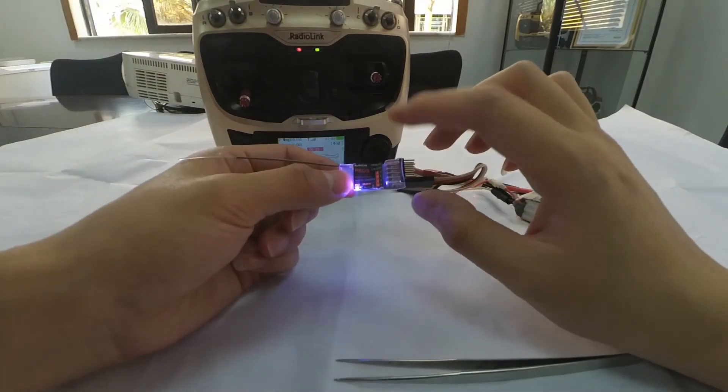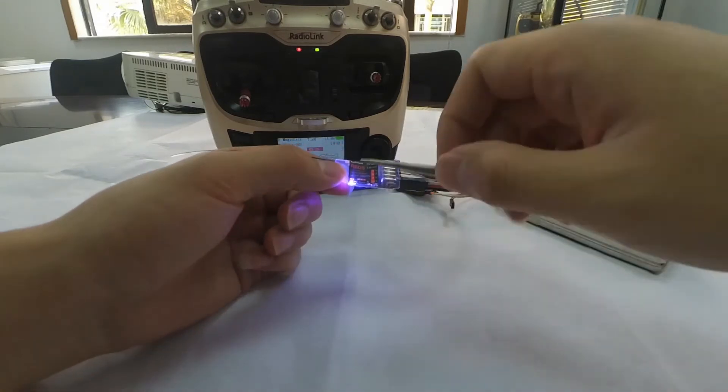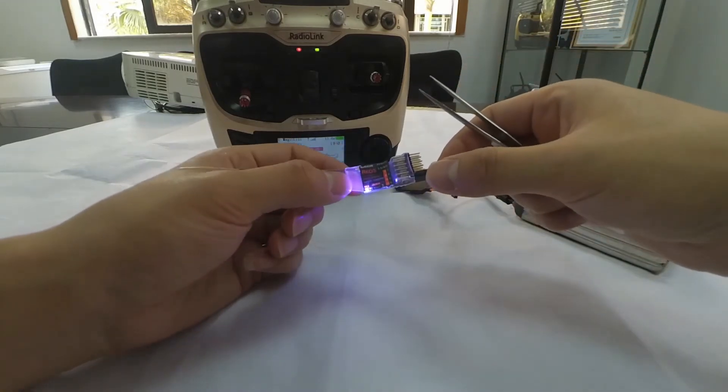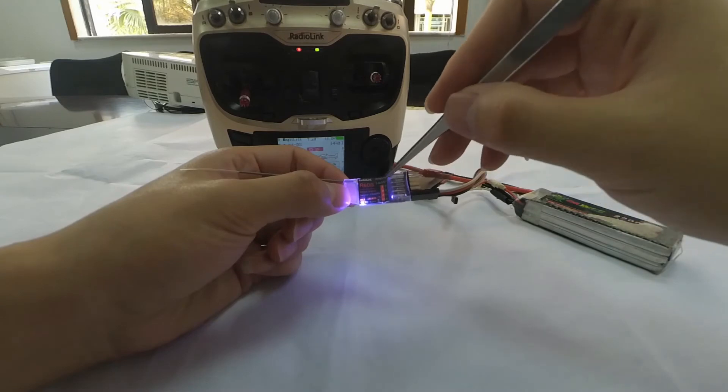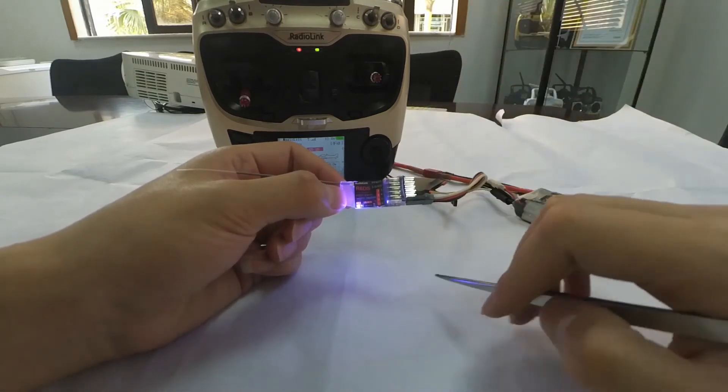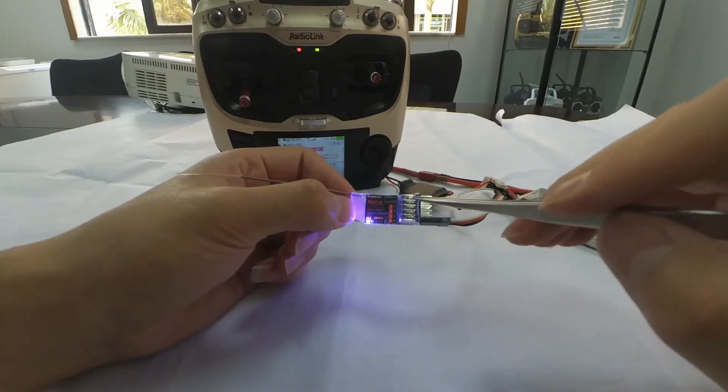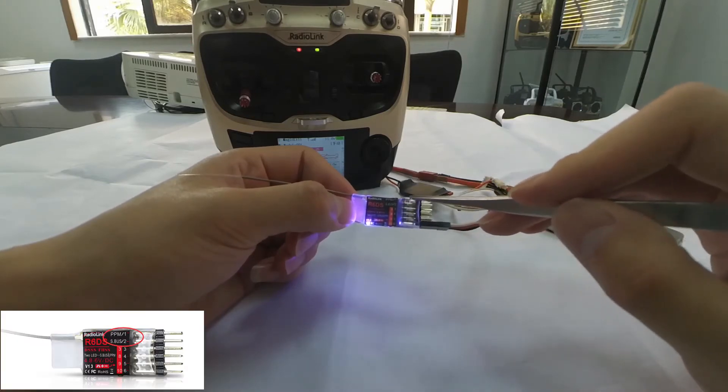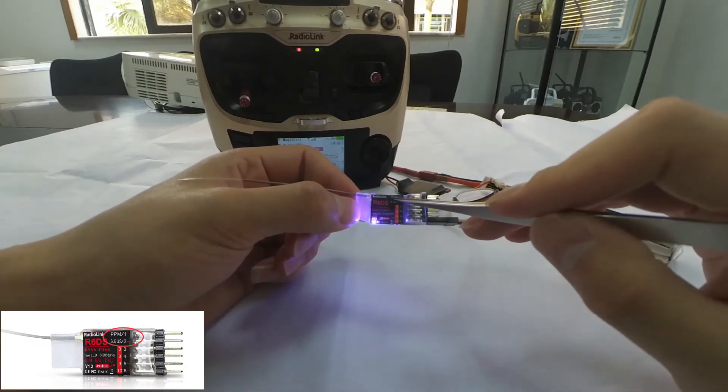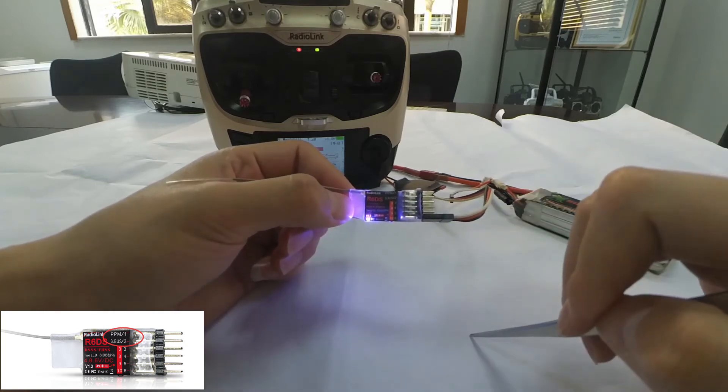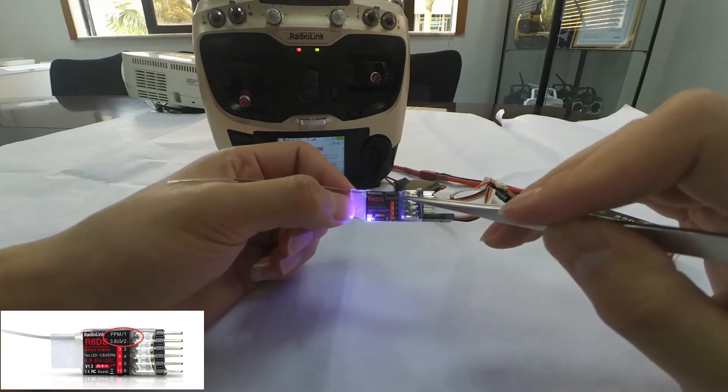There are totally three signal outputs for R60S: PPM, S-bus, and PWM. We can see that the current LED color is blue and purple, meaning the current signal output is PPM and S-bus. We can see from the sticker pasted on the receiver that if PPM signal is needed, channel 1 should be connected, while if S-bus signal is needed, channel 2 should be connected.